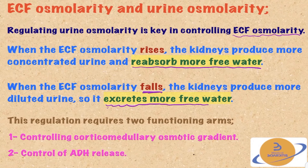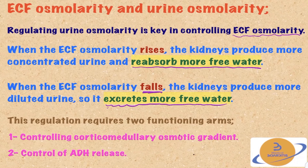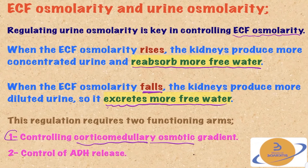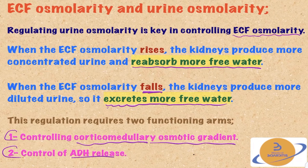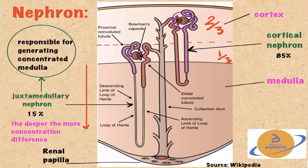Regulating the urine osmolarity is the key in controlling the extracellular fluid osmolarity. When the extracellular fluid osmolarity rises, the kidneys produce more concentrated urine and reabsorb or preserve more free water. On the other hand, when the extracellular fluid osmolarity falls or becomes more diluted, the kidney produces more diluted urine — in other words, we are excreting or losing more free water.